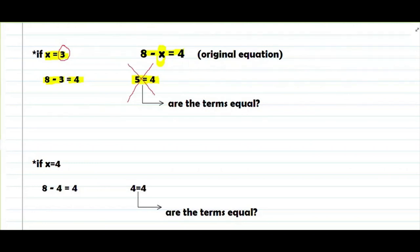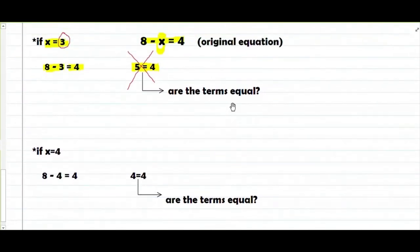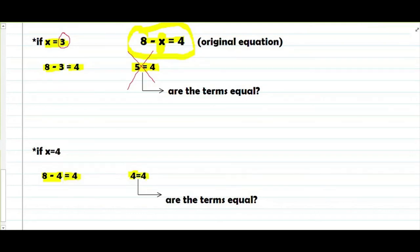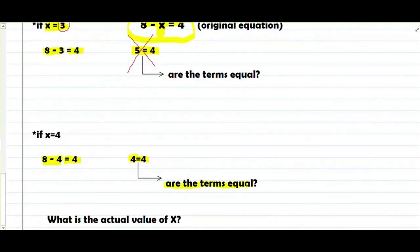Yung next naman is x is equals to 4. Ito pa rin ang gagamitin na equation: 8 minus x equals to 4. If x is equals to 4, papalitan na lang natin yung x ng 4. 8 minus 4, as what is 4. Copy-paste natin yung equals 4 — naging equation natin is 4 equals to 4. Are the terms equal? Equal ba yung 4 sa 4? Yes, equal yung 4 sa 4. Yung tama yung equation natin — kaya naging tama kasi tama yung ginamit nating value ng x.